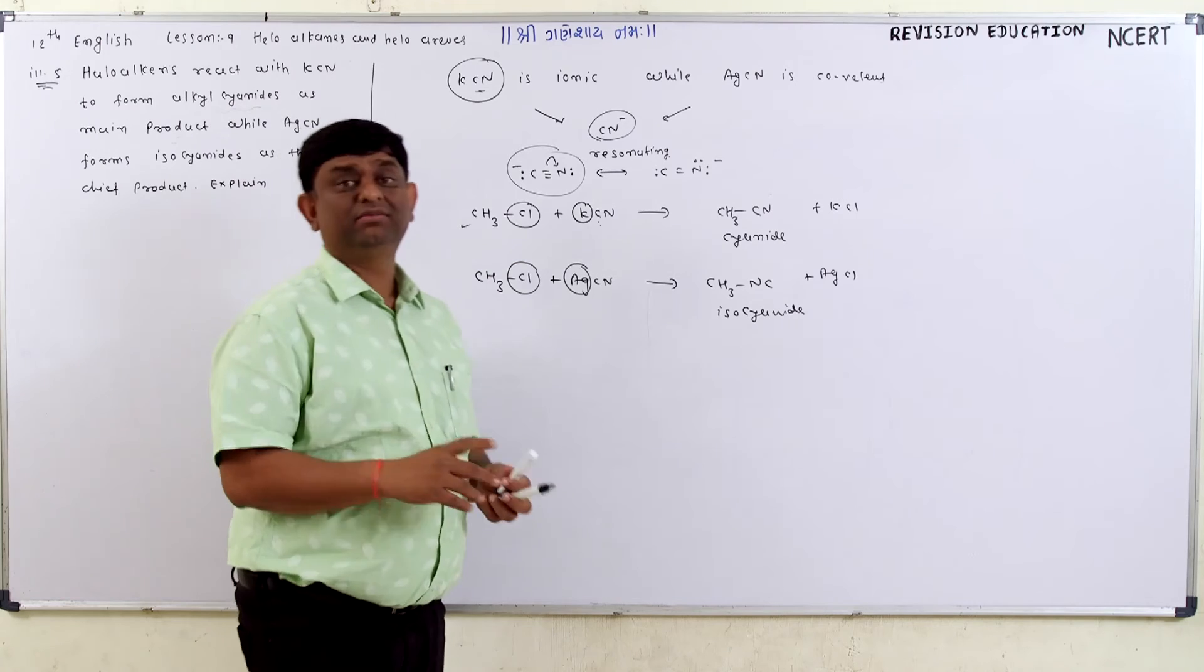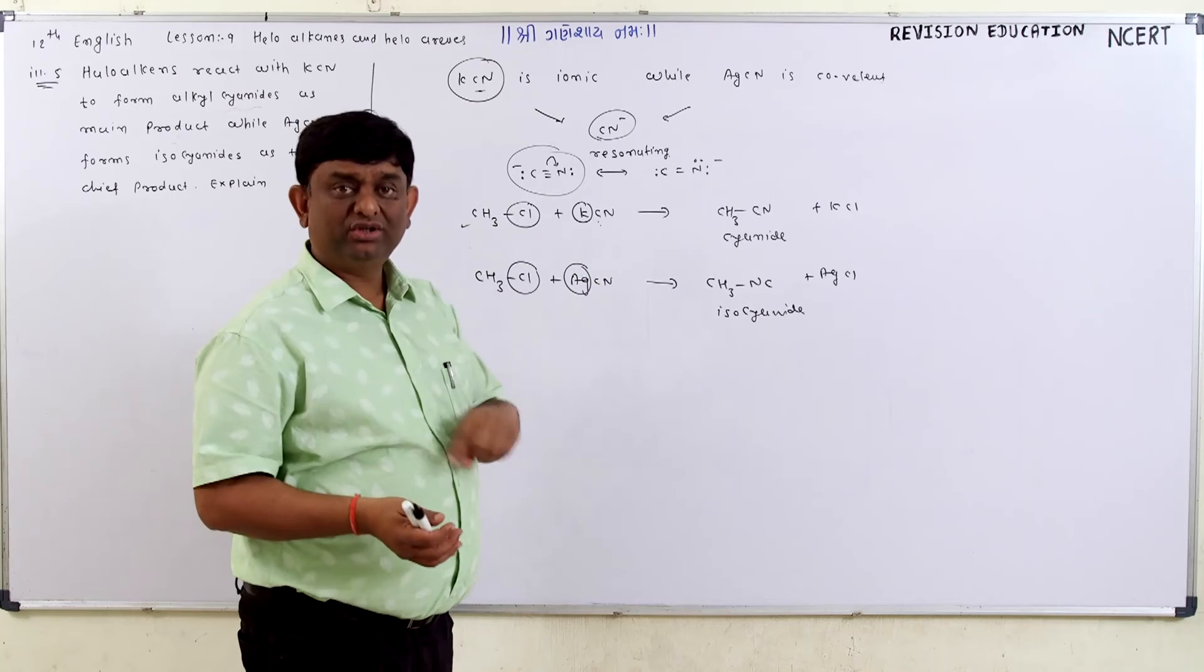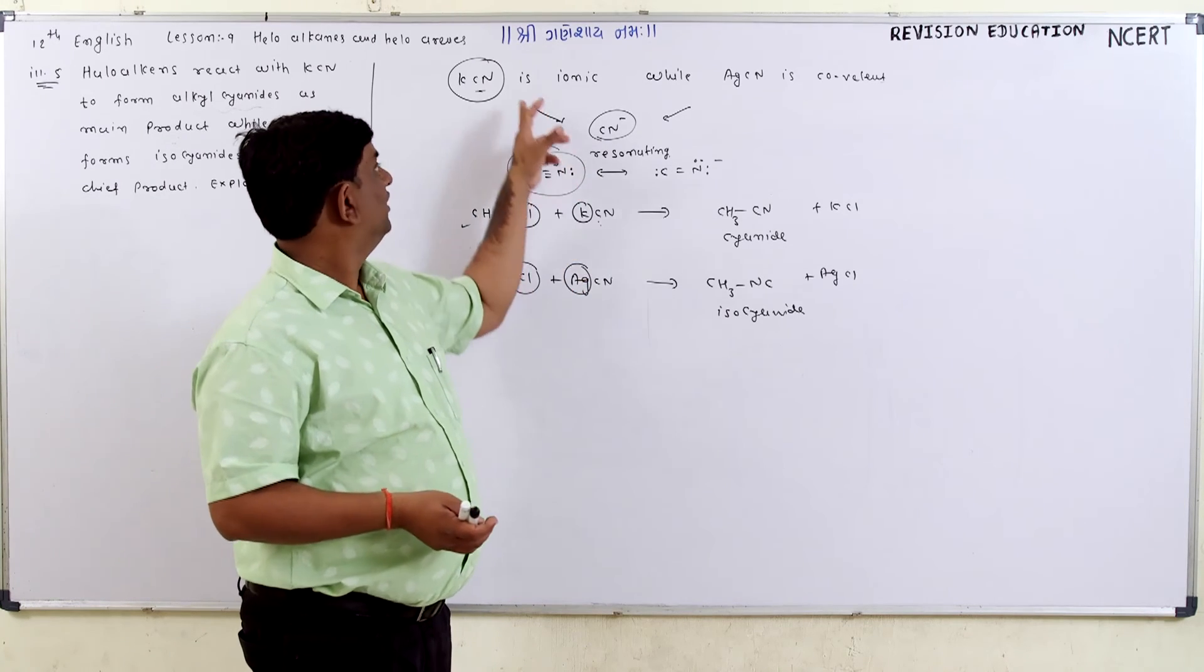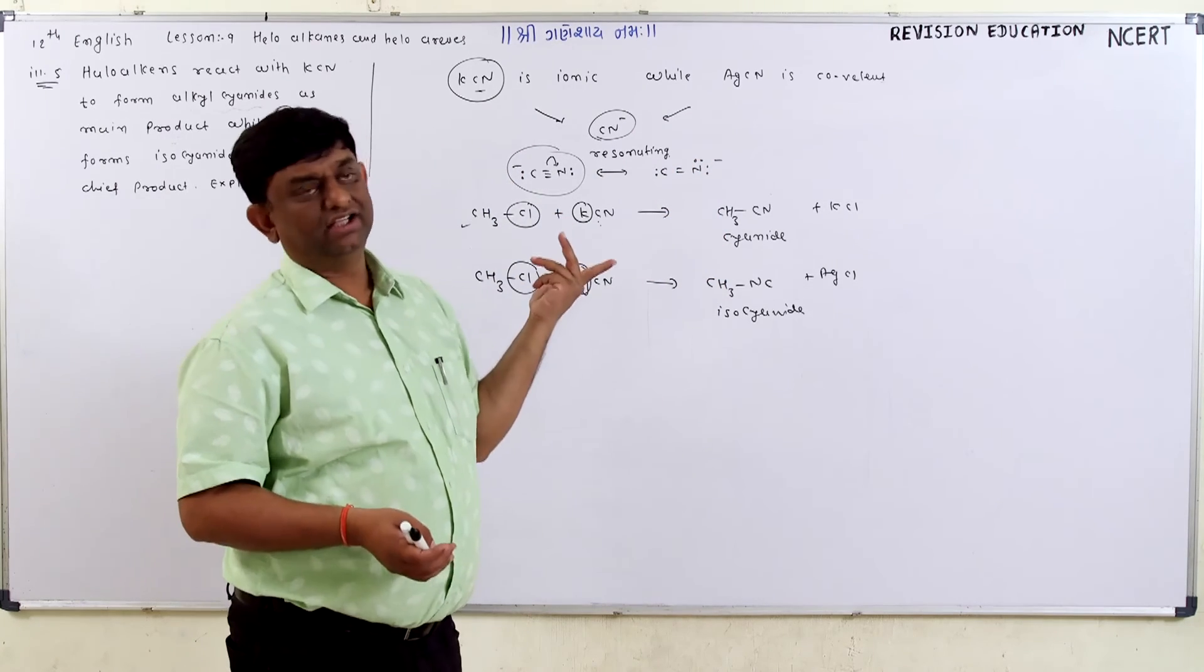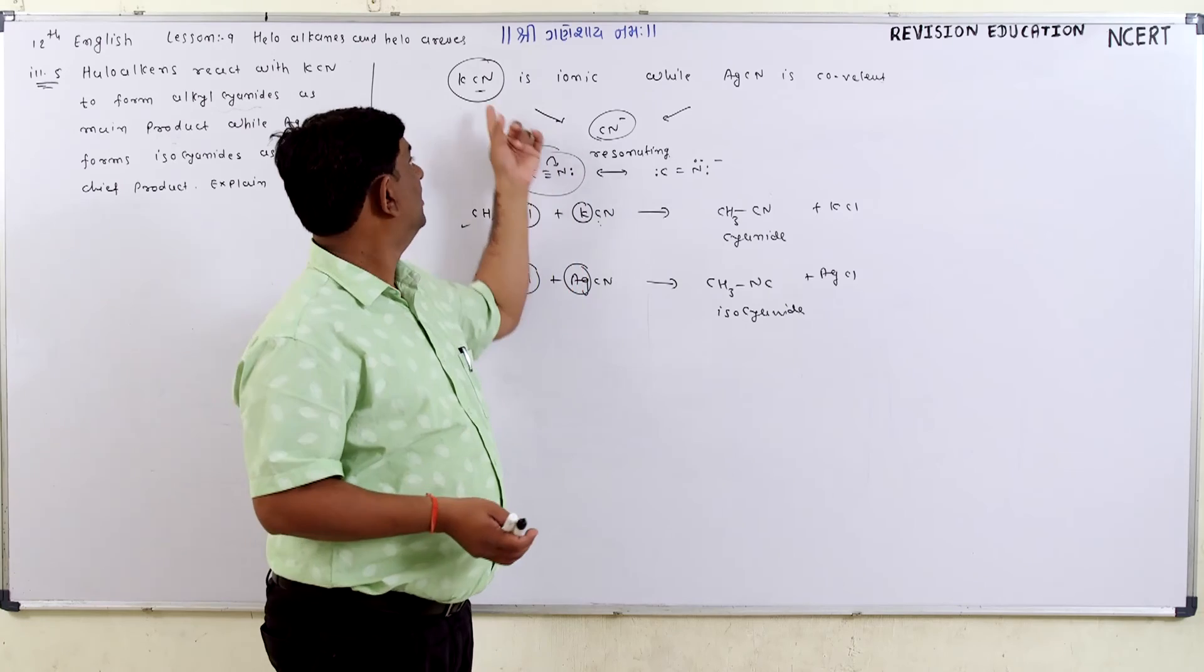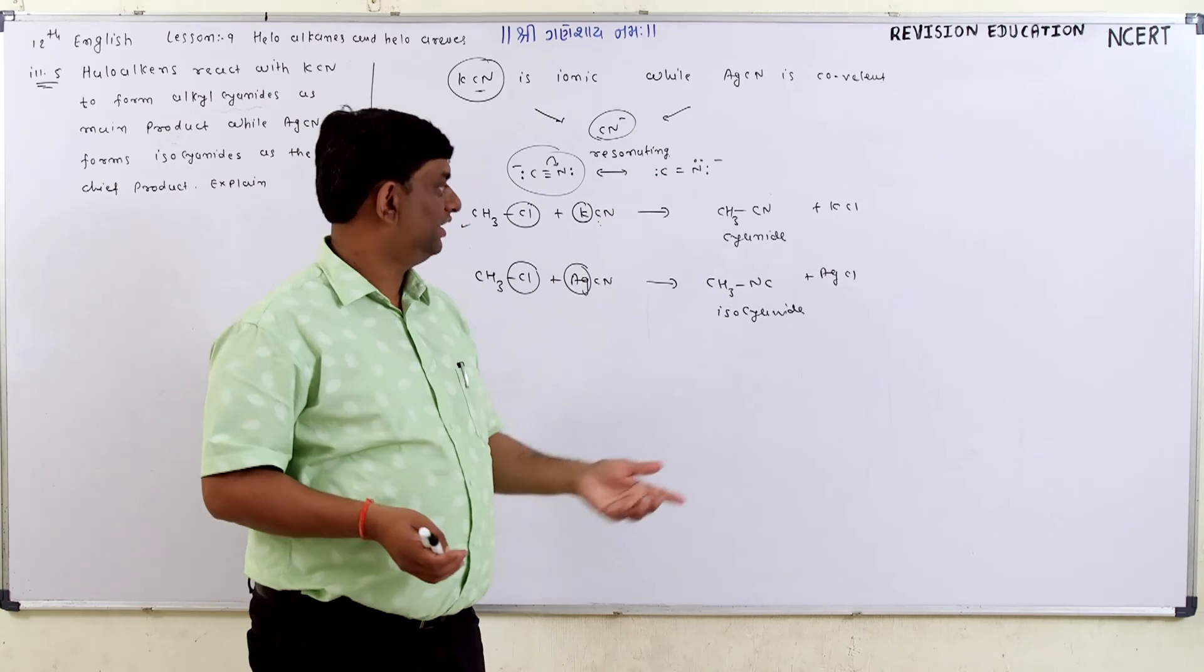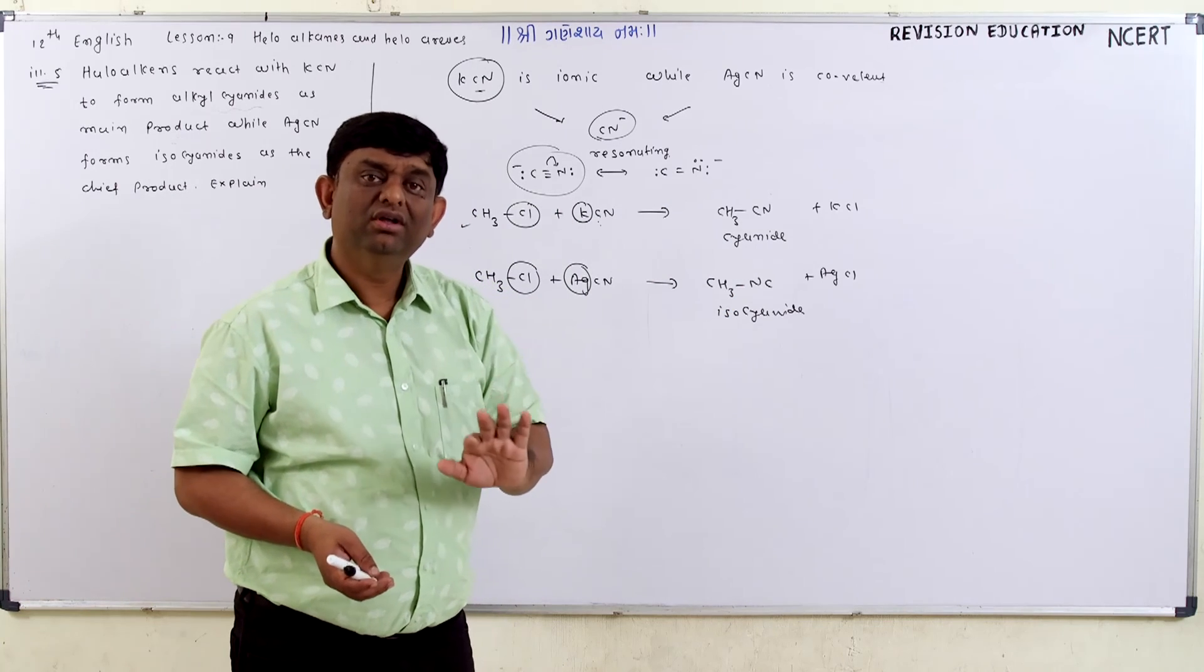So when AgCN is the reactant, cyanide product can form the iso-cyanate. And if you are asked to apply KCN with the reaction, you get the cyanide. Iso-cyanate.